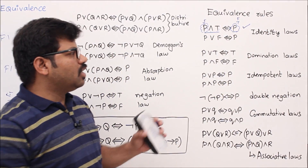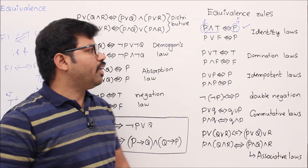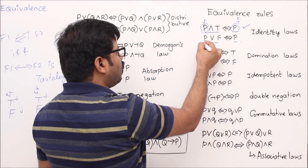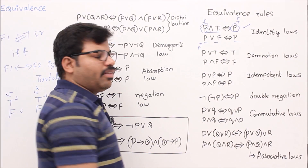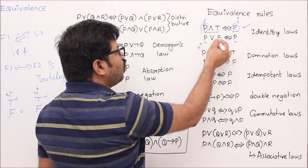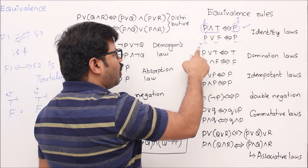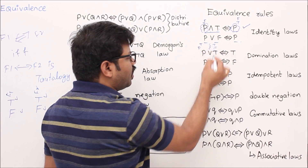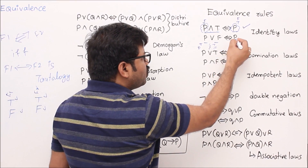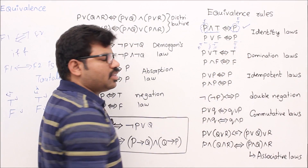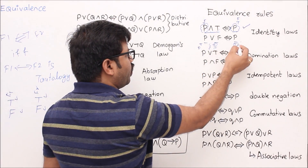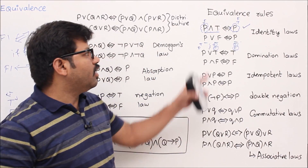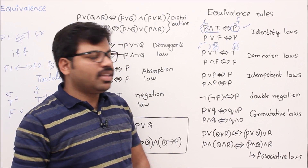From now onwards, p∧true is always equivalent to p. Similarly, p∨false is equivalent to p. When p is true, true∨false is true; when p is false, false∨false is false — its behavior is exactly true/false respectively for p's values, just like p itself. These are called identity rules: p∧true ≡ p and p∨false ≡ p.